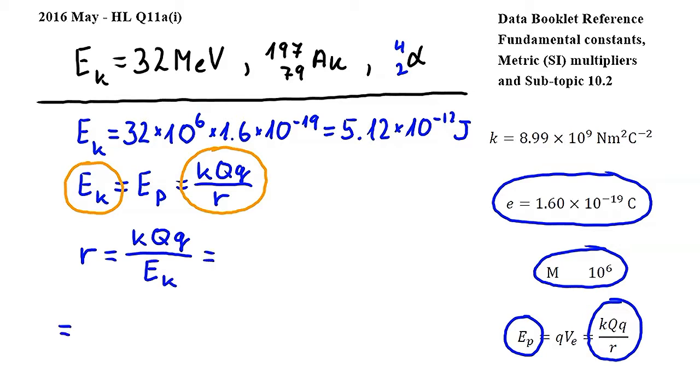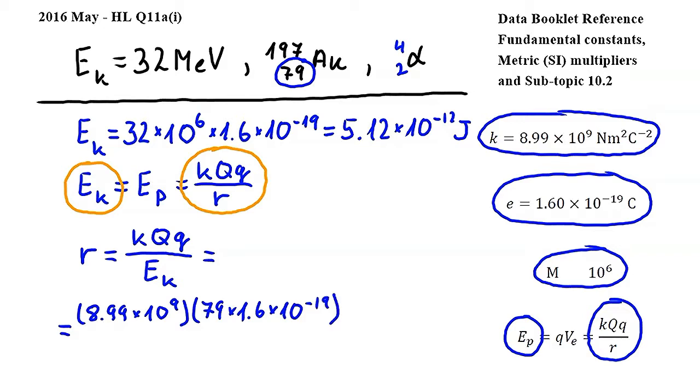Let's substitute. k can be found in the fundamental constant section of the data booklet, and it is equal to 8.99 times 10 to the power of 9, multiplied by the charge on the gold nucleus. Since the gold nucleus has 79 protons, its charge will be 79 times the elementary charge, so 79 times 1.6 times 10 to the power of negative 19.